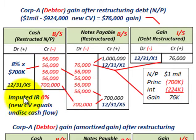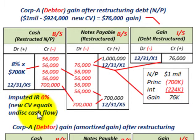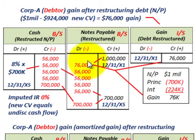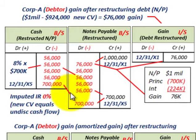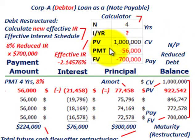Our entry was based on an imputed interest rate of zero, so the new carrying value of $924,000 equals the discounted cash flows of $924,000. That approach recognizes the total gain all at the date of restructuring — crediting the gain on the income statement and debiting or reducing the notes payable by $76,000. Now let's look at the second approach: amortizing this gain out using an amortization schedule.